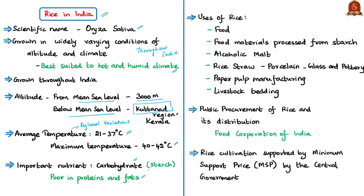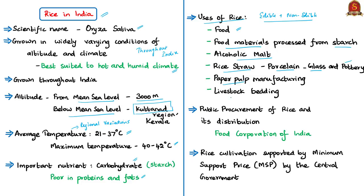Let us now see some important uses of the rice crop, including both edible and non-edible portions. Rice is mainly consumed as a food grain and many food materials are processed from its starch. Alcoholic malt is also manufactured from rice. Rice straws are used in making porcelain, glass, and pottery. Paper pulp is also manufactured using rice crop. Livestock bedding is traditionally made with dried rice straws, husks, etc.